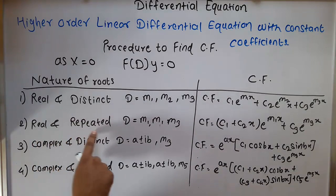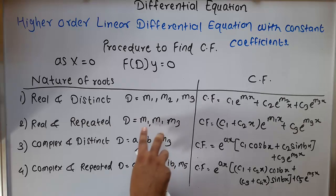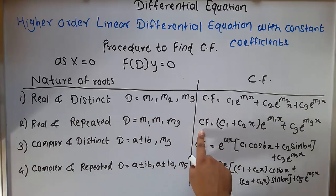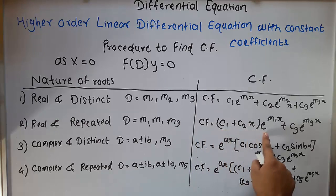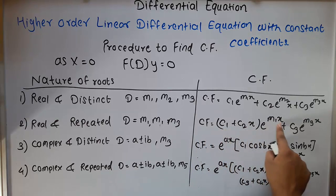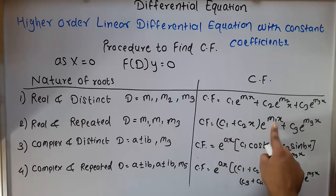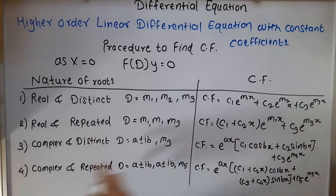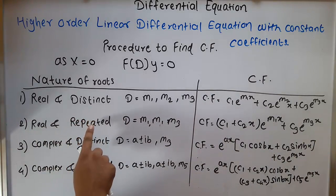Rule 2 — real and repeated roots: if the roots are m1, m1 (same root) and m3, then the complementary function will be (c1 + c2·x)·e^(m1·x) + c3·e^(m3·x), where c1 and c2 get combined. These rules apply for real roots, whether distinct or repeated.